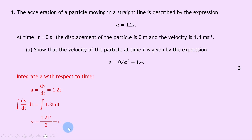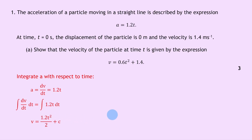We get plus c because every time you integrate you get a constant. Since 1.2 divided by 2 gives 0.6, we simplify to get v equals 0.6t squared plus c.